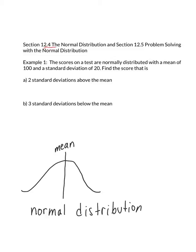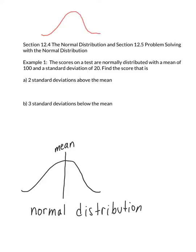Section 12.4 is on the normal distribution, and section 12.5 is problem solving with the normal distribution. Whenever you are studying something in everyday life and you graph your data points, and your data points make this bell jar shape where the largest mound is in the dead center, that's what we call the normal curve. It's really important because a lot of things in everyday life have this normal curve shape if we were to plot that data, and there are a lot of awesome properties about the normal distribution that allow us to further analyze our data.